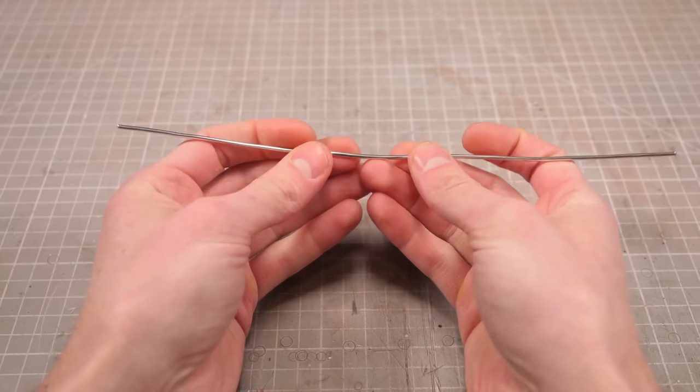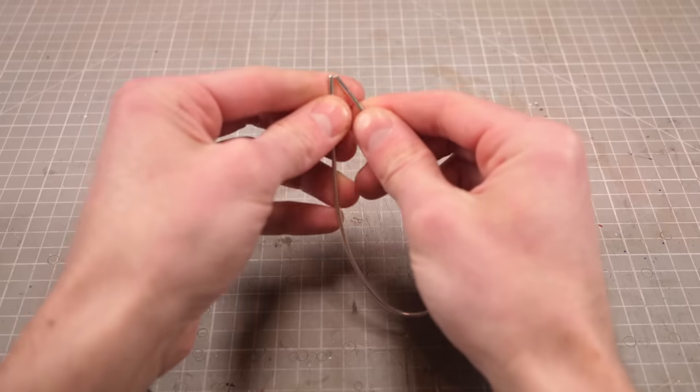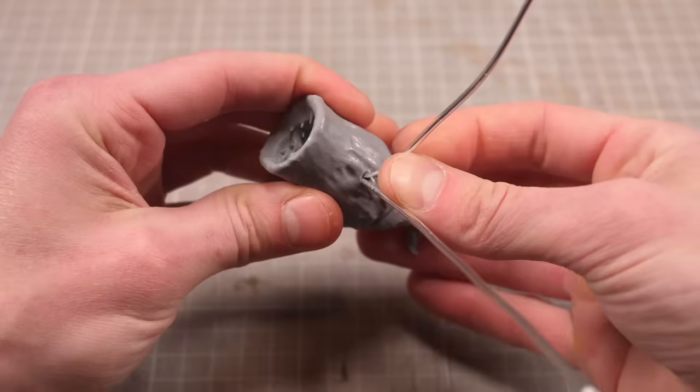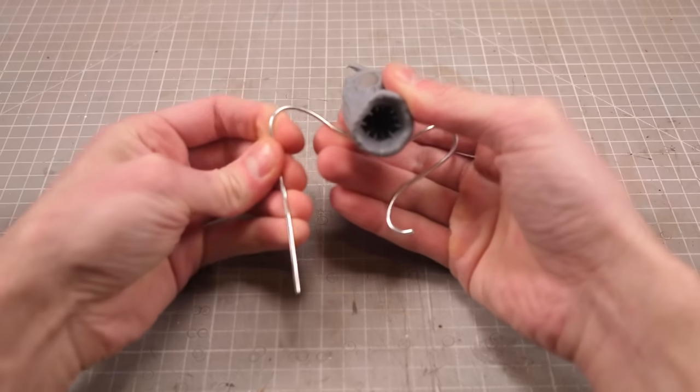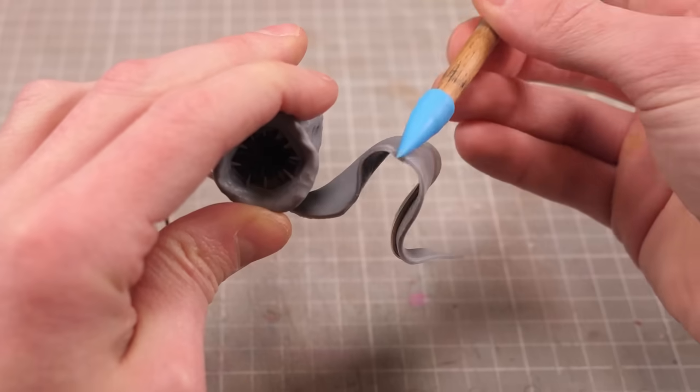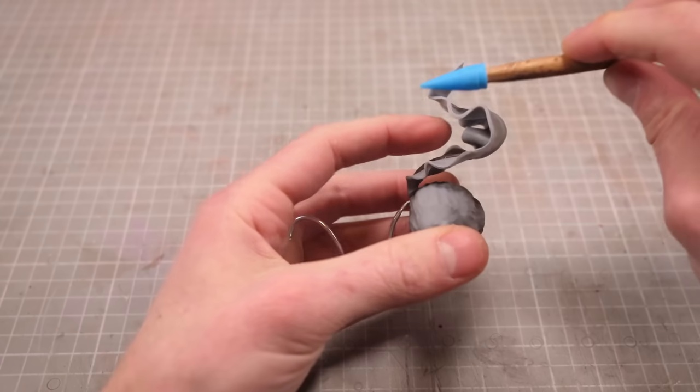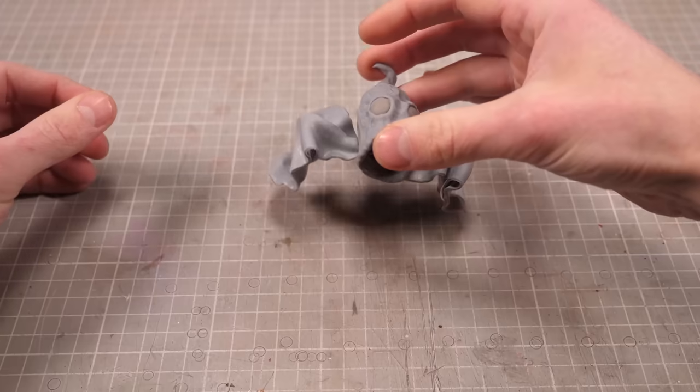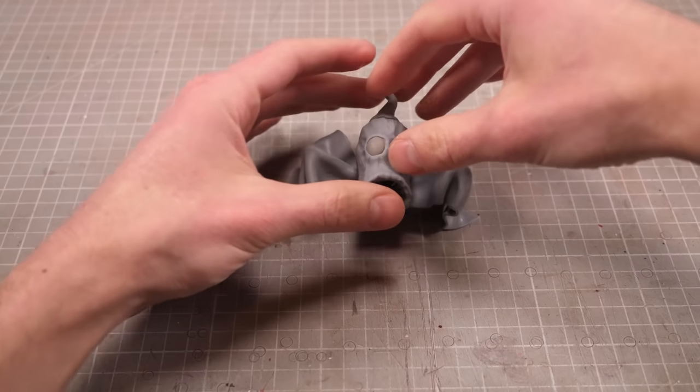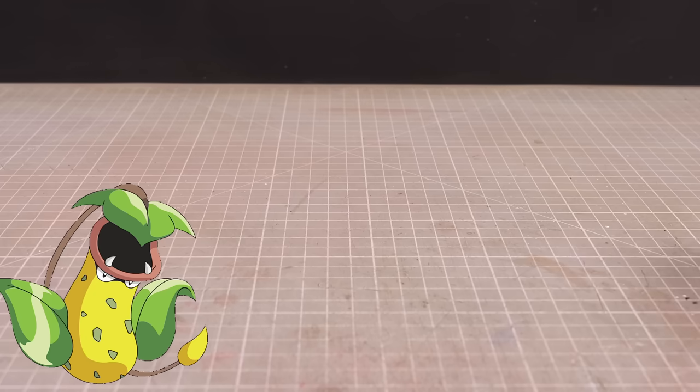I wanted to make Weepinbell's leaves supporting his body so to help hold the weight I'll stick a length of folded wire into its underside then bend them out into appropriately leafy positions. Then I can drop some larger leaves on top of the wires add some texture on top and fold them in such a way that they look like little leafy legs. Otherwise that's pretty much it for Weepinbell which means I can finally get to work on the star of the show Victreebel.